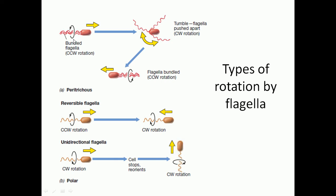For tumbling movement, all of the flagella work independently, not together like a bundle. In this case, three flagella are each rotating via their own clockwise rotation independently. Due to this clockwise rotation, the bacteria moves from one place to another in a tumbling fashion. Both bundle and tumbling movements are equally important for different orientations of bacterial movement.